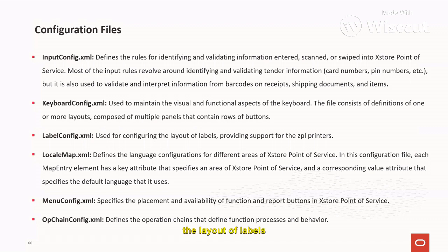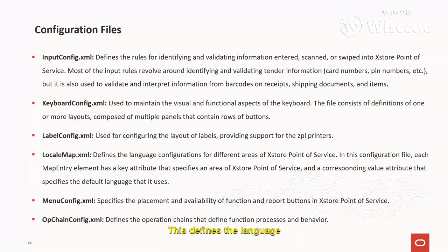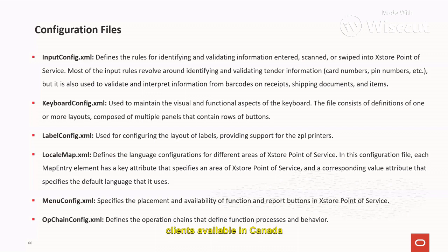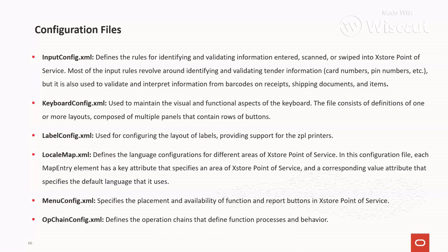The label_config.xml file is used for configuring the layout of labels, providing support for JPL printers. The locale_map.xml file defines the language configuration for different areas of the Access Store Point of Service — for example, you can configure an implementation in Canada so that associates see the interface in French while receipts are printed in English.